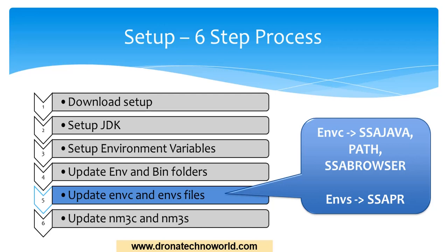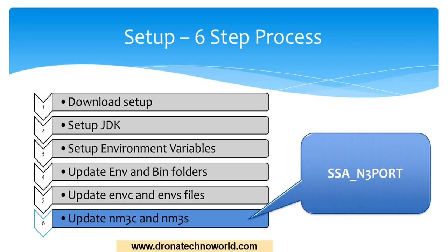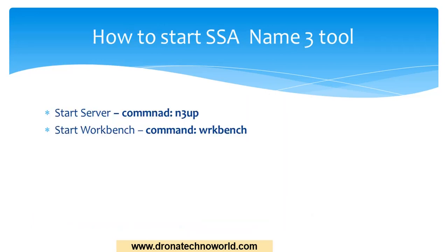The fifth step is updating the envc and envs files. These are the files used by the tools. We need to set up envc for the SSA_JAVA path variable and SSA_BROWSER, and in the envs file we set up SSA_PR, which is the proper population file. In nm3c and nm3s there is only one property to update: the SSA_N3_PORT.